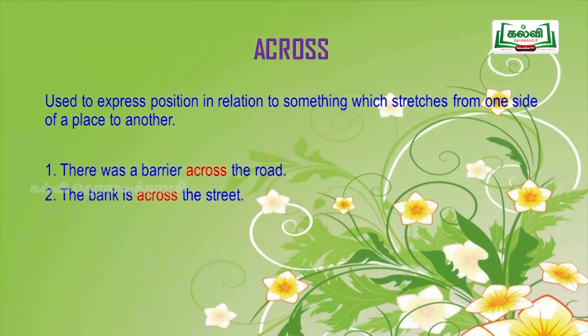Across is the preposition used to express position in relation to something which stretches from one side of a place to another. Examples: 'There was a barrier across the road.' 'The bank is across the street.'